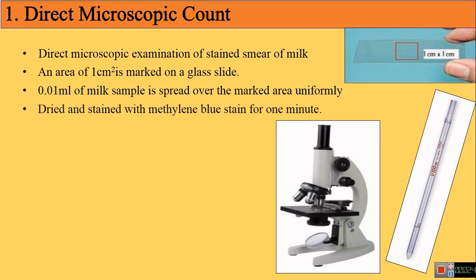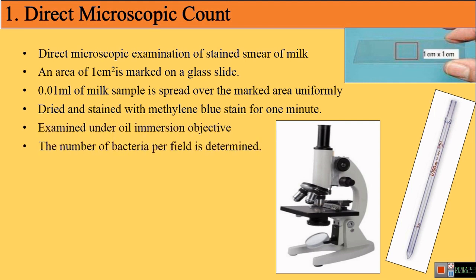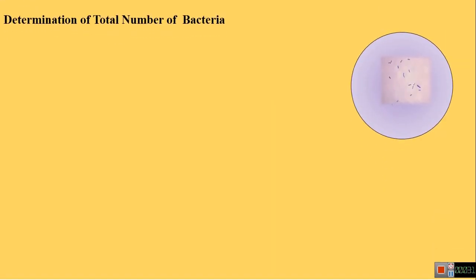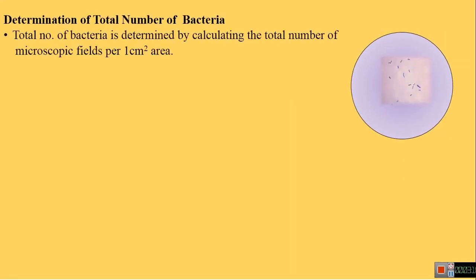The smear is dried and stained with methylene blue, then observed under the microscope directly, and the number of bacteria per microscopic field is determined. Since it is not possible to scan the entire marked area, the number of bacteria in a few microscopic fields are counted and the average number per field is calculated.